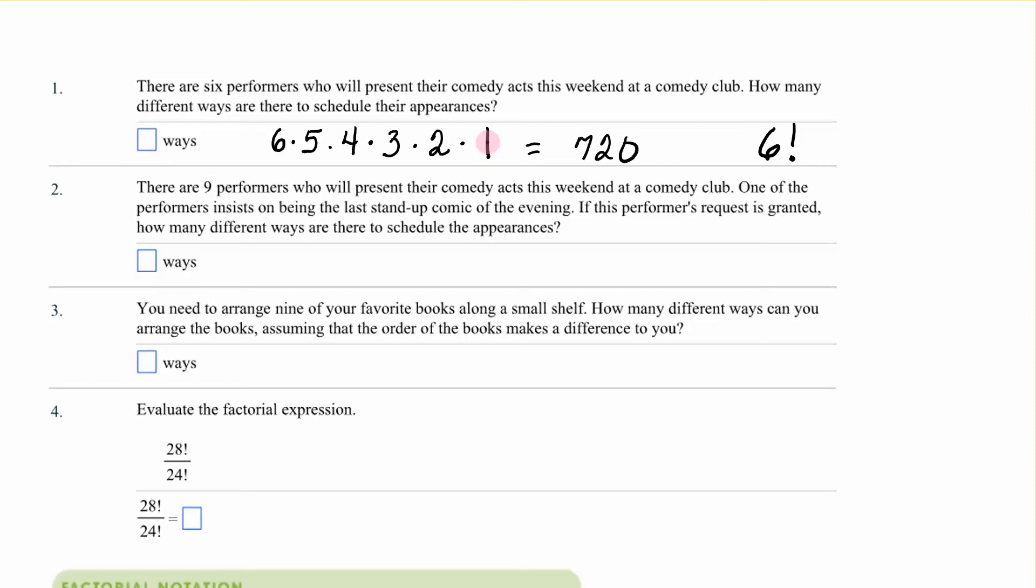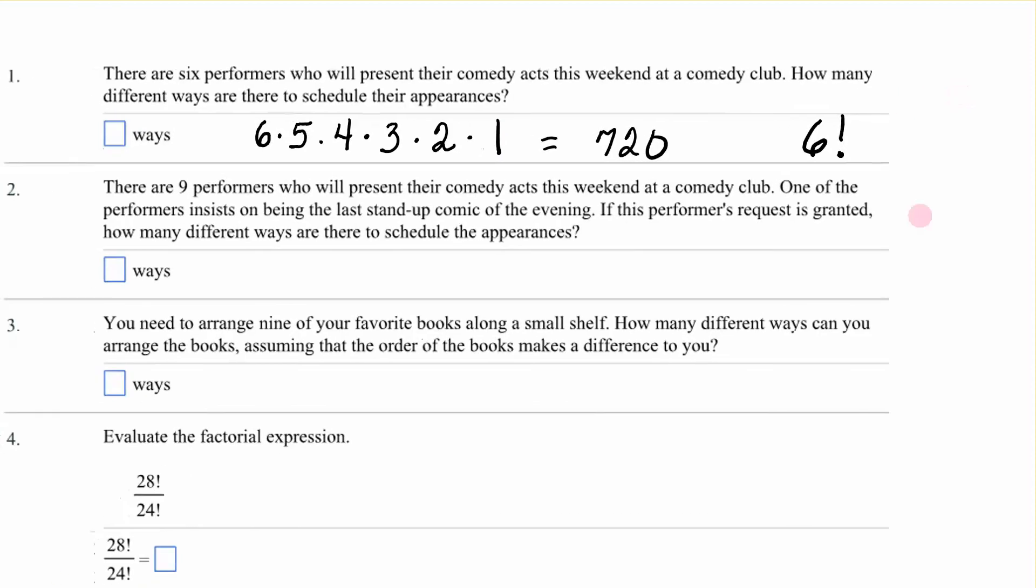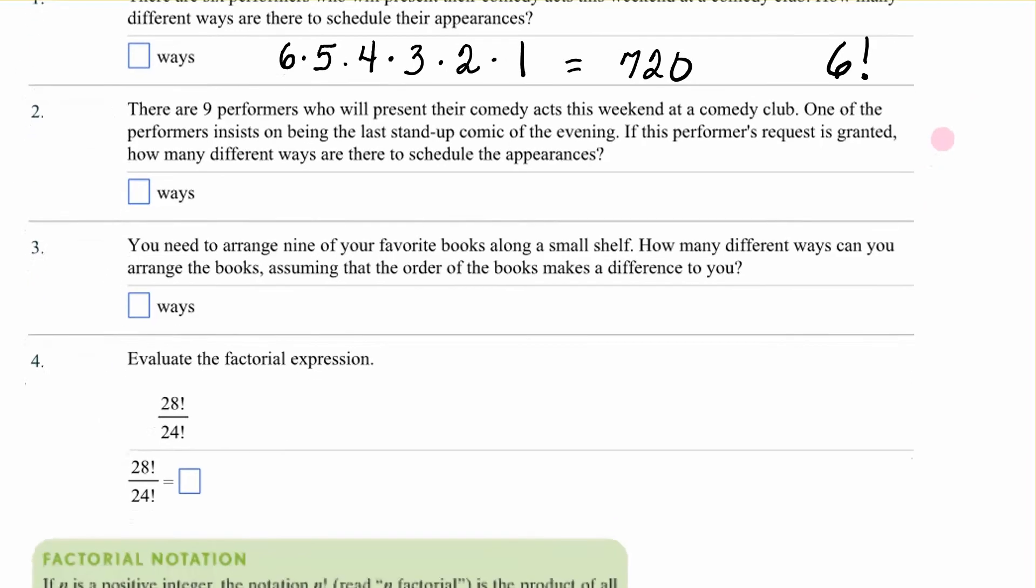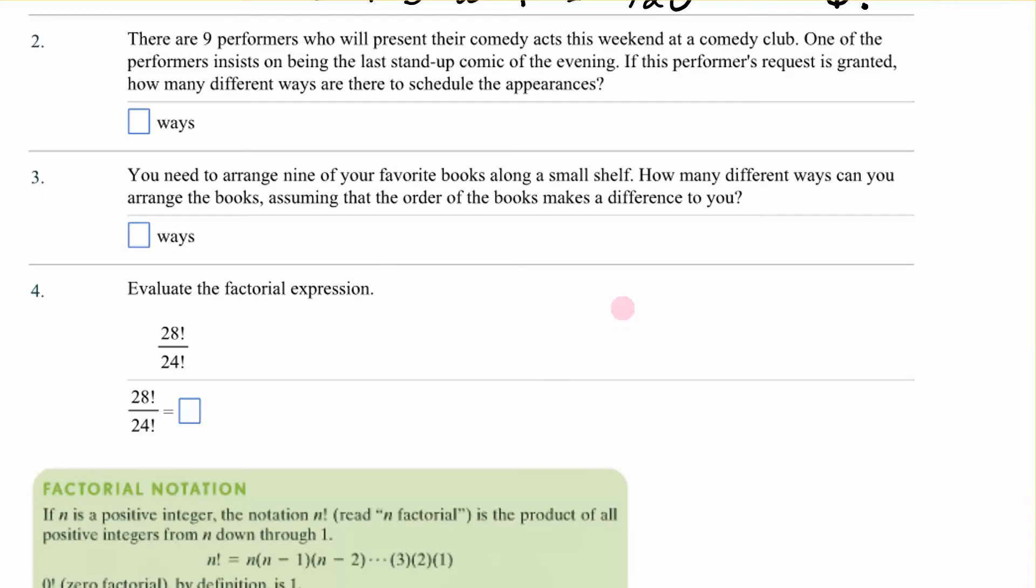Let's see if maybe that will happen in some other problems. Number two. There are nine performers who will present their comedy acts this weekend at a comedy club. One of the performers insisted on being the last stand-up comic for the evening. If this performer's request is granted, how many different ways are there to schedule the appearances?